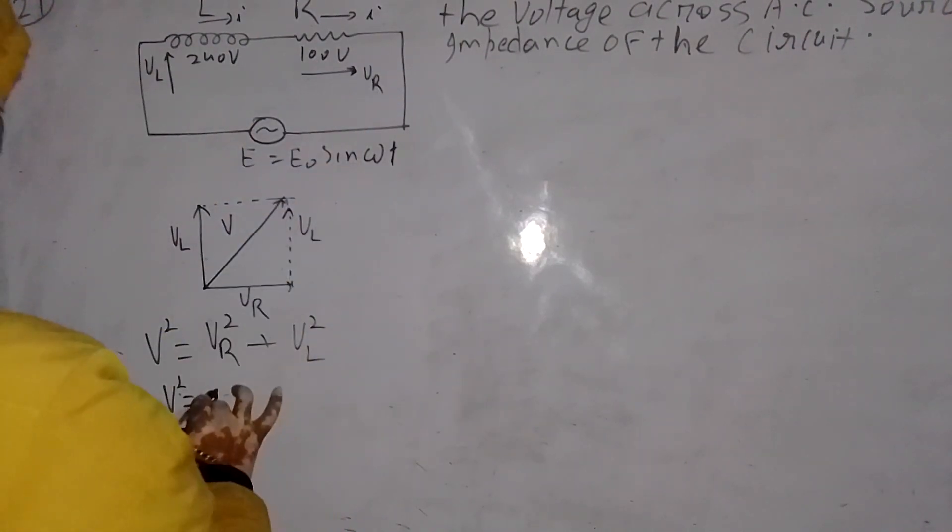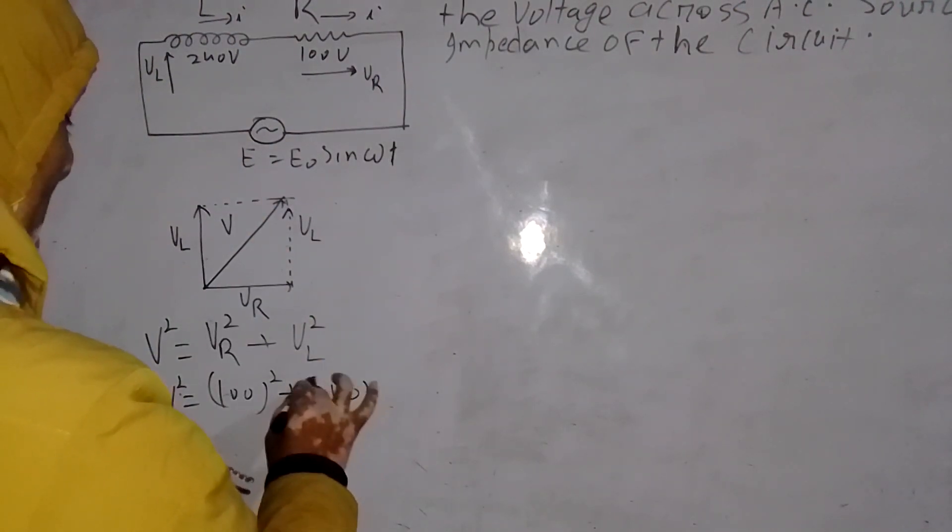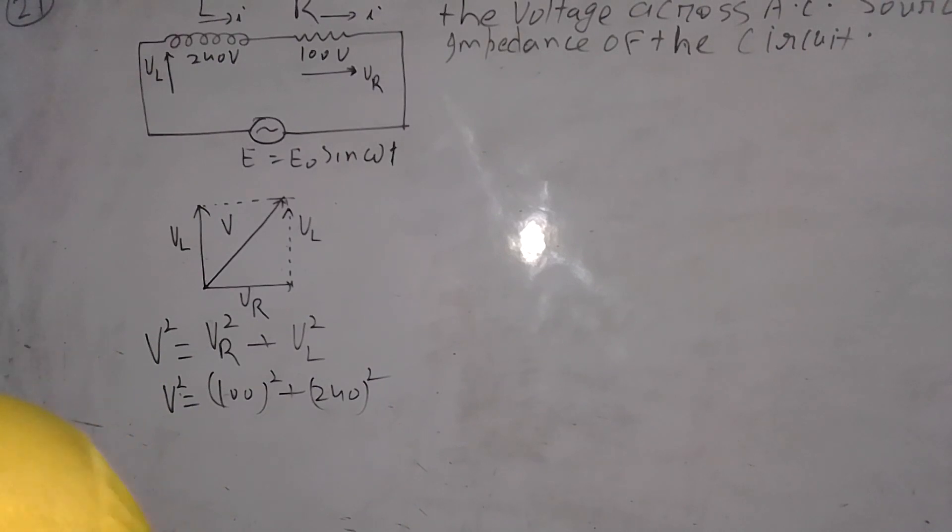Value of VR is 100, so write here 100 squared. And value of VL is 240, so write here 240 squared.